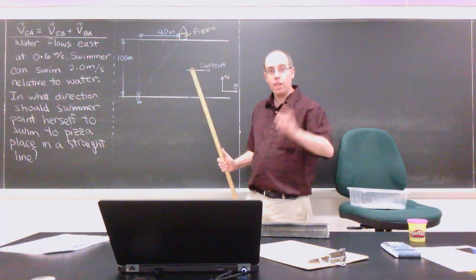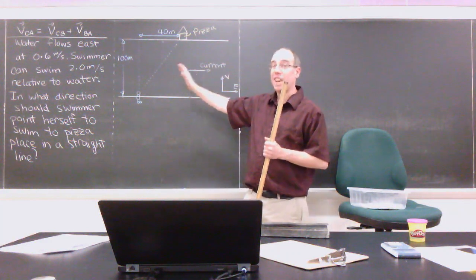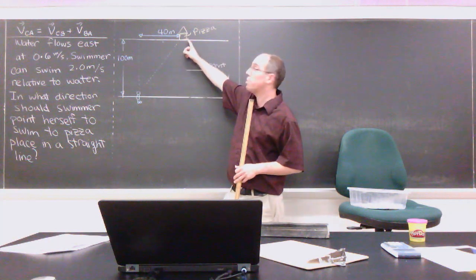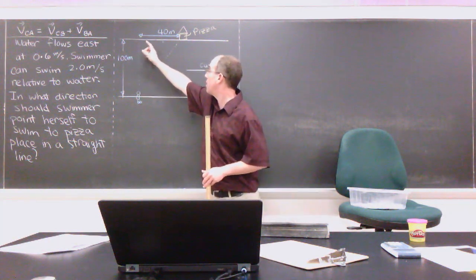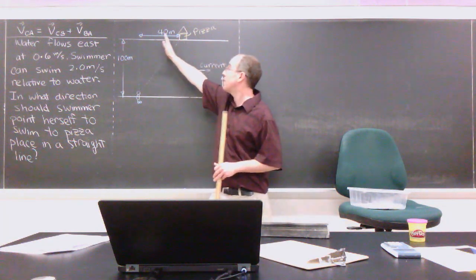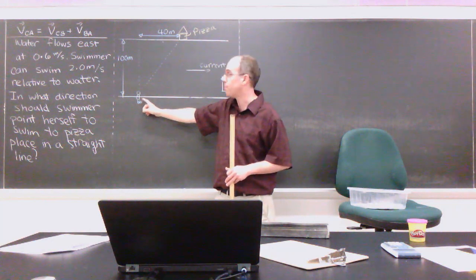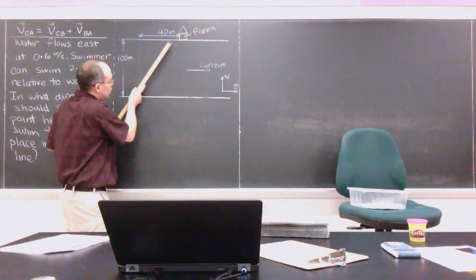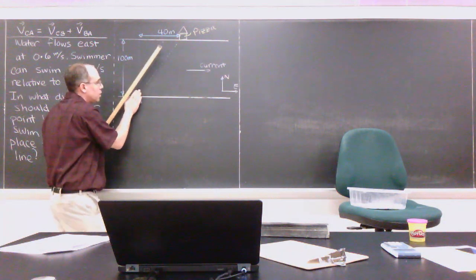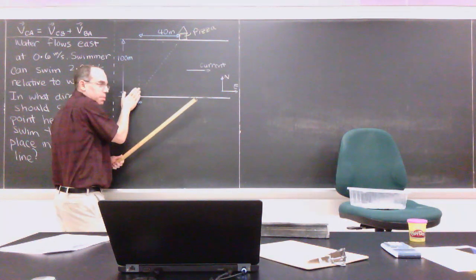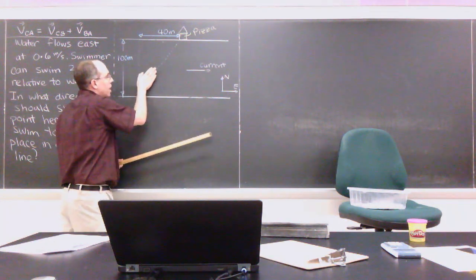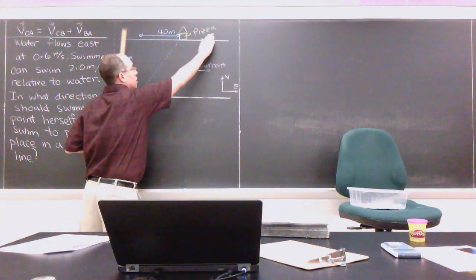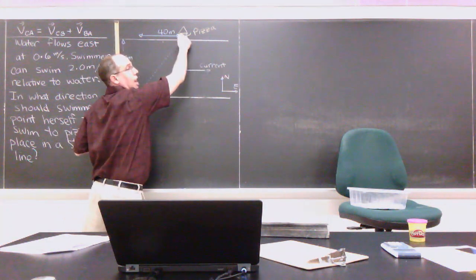This is the third video on relative velocity and the second example problem on this topic. We have a swimmer who wants to swim to a pizza place on the other side of the river. The river is 100 meters wide and the pizza place is 40 meters downstream from the swimmer's current position. There's a current flowing east in the river, so if the swimmer simply pointed herself directly at the pizza place, the current would carry her downstream past it.